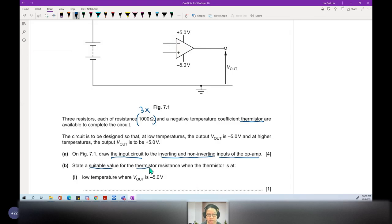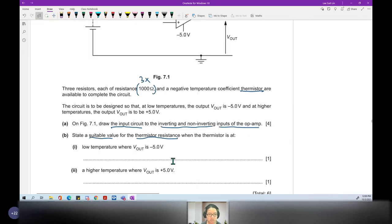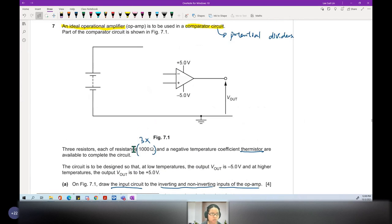State a suitable value for the thermistor resistance when the thermistor is at low and high temperature. I guess this one is straight away level 3, 12 by 5.